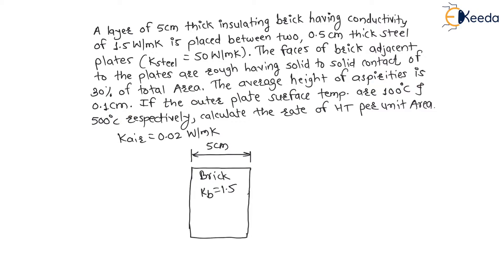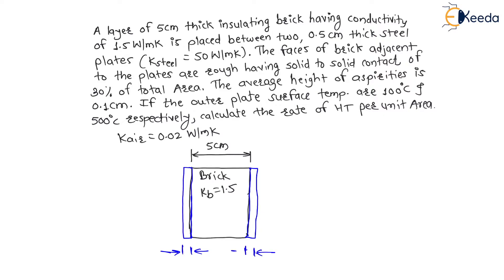Due to this surface roughness, asperities exist on both sides of the brick for 0.1 cm. The height of asperities on both sides is 0.1 cm. These are surface irregularities on both sides.